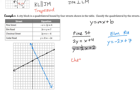For Chestnut Street, dividing both sides by 2 gives Y equals 1 half X minus 3. The Y-intercept is at 0, negative 3 and the slope is 1 half — up 1 over 2, or down 1 left 2.